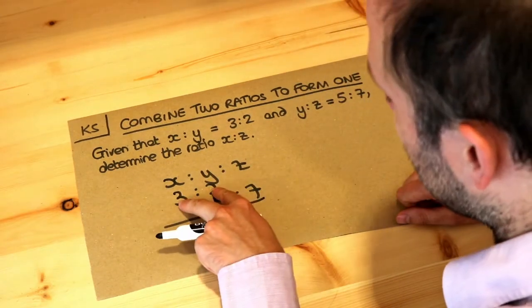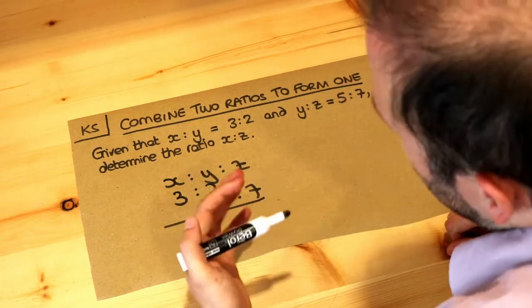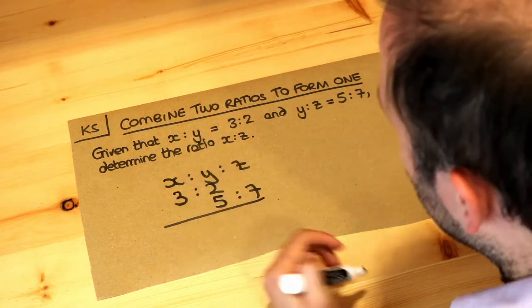But we want to multiply these numbers in such a way that we can make these two y values the same. So it's a bit like working out the common denominators with fractions so you can add the two fractions together.